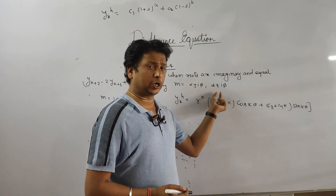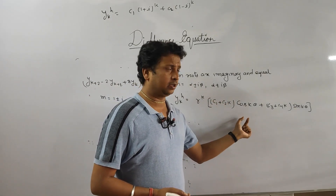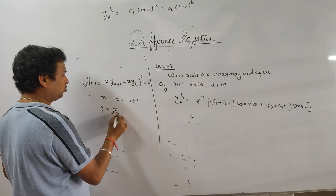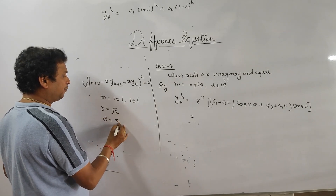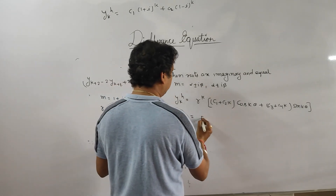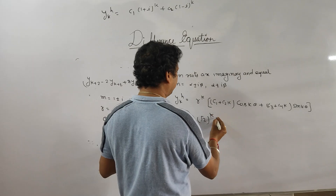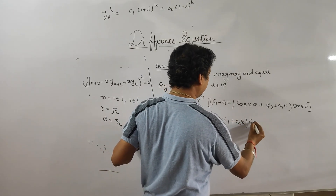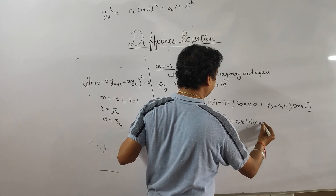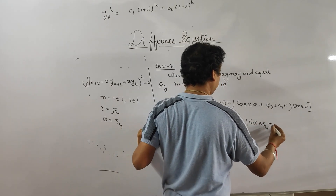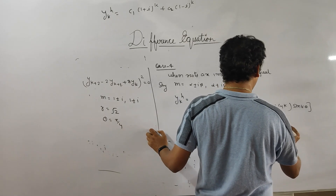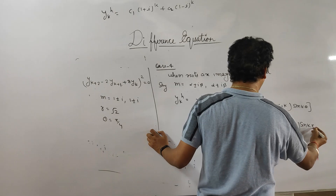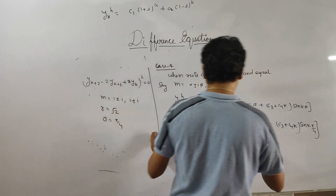For this example with imaginary equal roots, r equals √2 and theta equals π/4. Substituting, the solution is y_k^h equals (√2)^k times [(c1 plus c2·k)·cos(kπ/4) plus (c3 plus c4·k)·sin(kπ/4)].